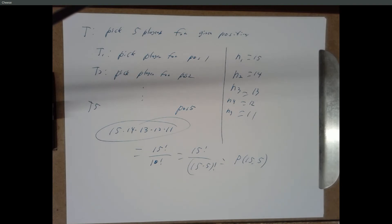In combinations, it's like you're creating a set — sets aren't ordered. It's just like having a pile of five people who are going to be on the basketball team, with no first person or second person.